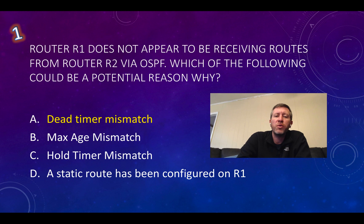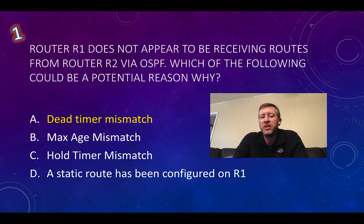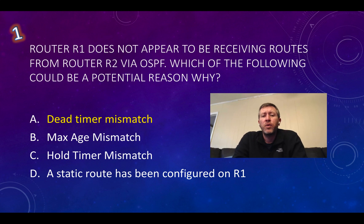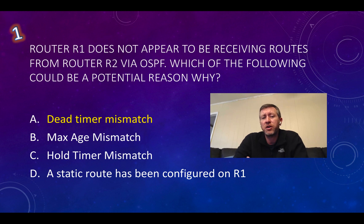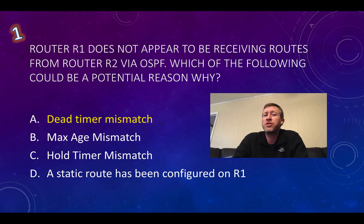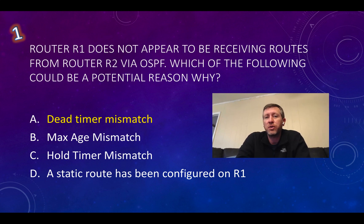Question number one: router R1 does not appear to be receiving routes from router R2 via OSPF. Which of the following could be a potential reason why? When setting up an OSPF routing protocol, the hello and dead timers actually need to match on those routers. If they don't match, you'll get a hello or dead timer mismatch, and the routers won't form a neighbor connection, so they won't be updating their routes.